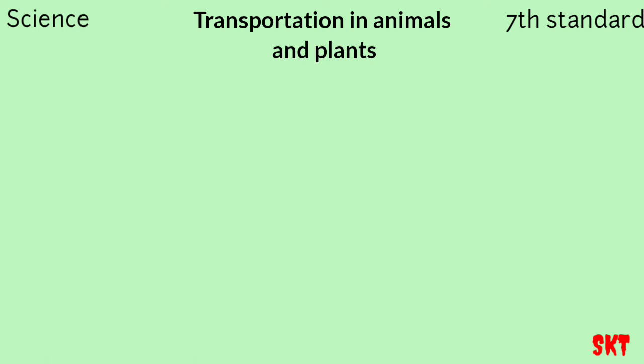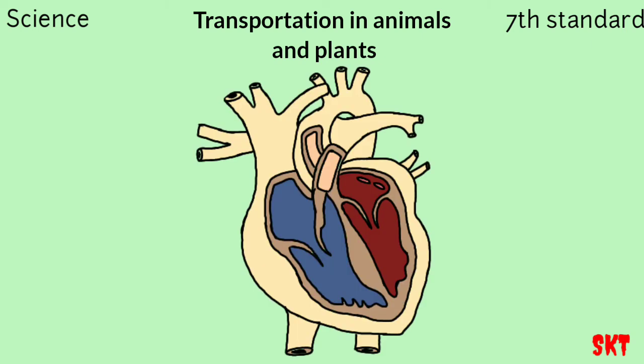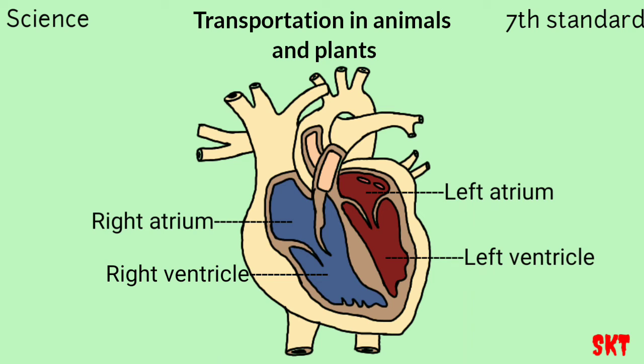The human heart has four chambers: right atrium, left atrium, right ventricle, and left ventricle. Oxygenated blood from the lungs enters through the pulmonary vein into the left atrium. From the left atrium it moves down to the left ventricle. From the left ventricle it moves to all parts of our body through the aorta. The aorta connects to the arteries, so oxygenated blood moves from the left ventricle through arteries to all parts of the body.